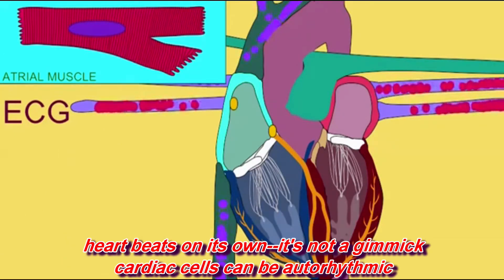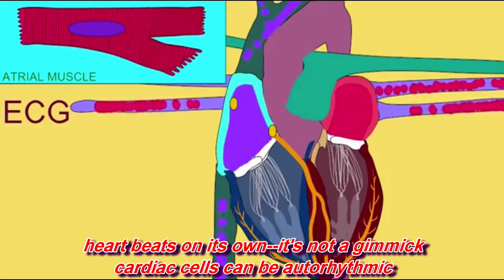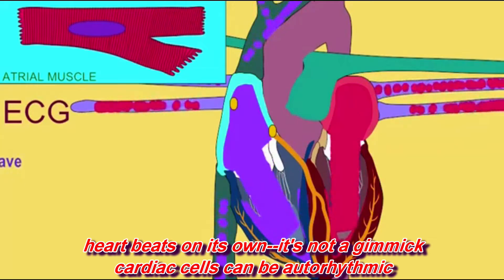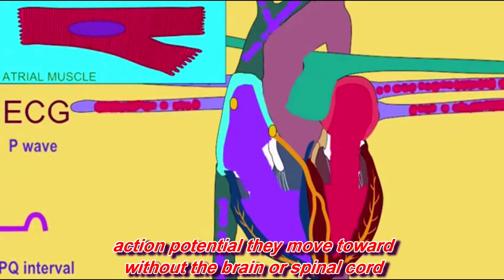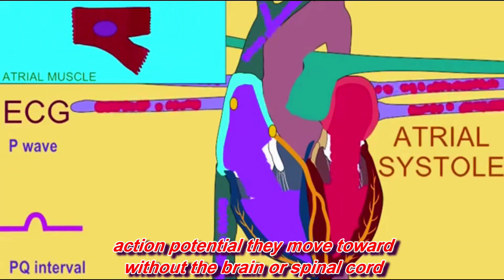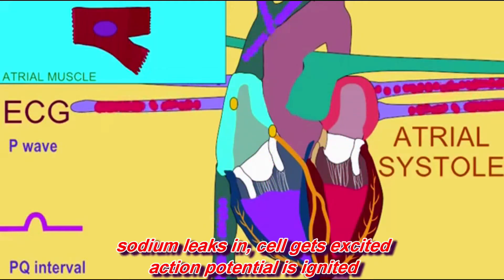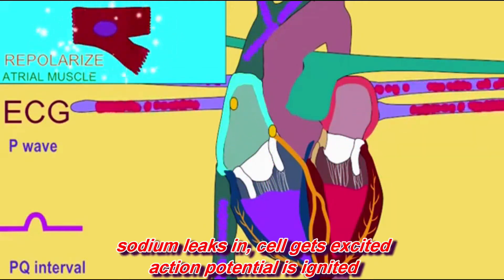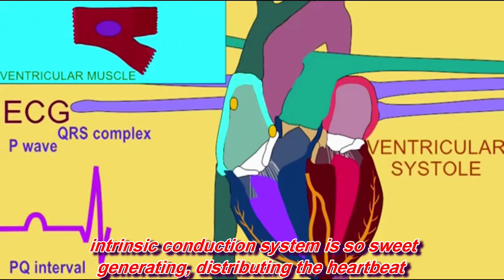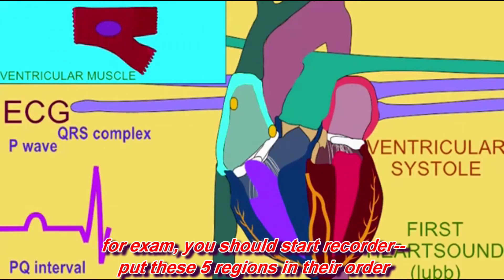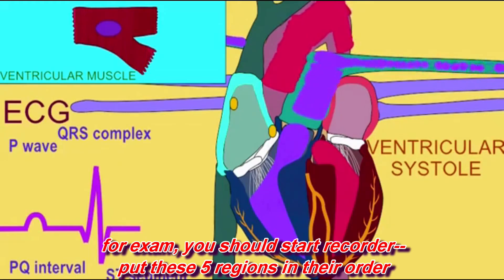Heartbeat's on its own, it's not a gimmick. Cardiac cells can be auto-rhythmic. Action potential, they move on without the brain or spinal cord. Sodium leaks and cell gets excited, action potential is then ignited. Intrinsic conduction system is so sweet, generating, distributing the heartbeat. For exam, you should start a recorder, put these five regions in their order.